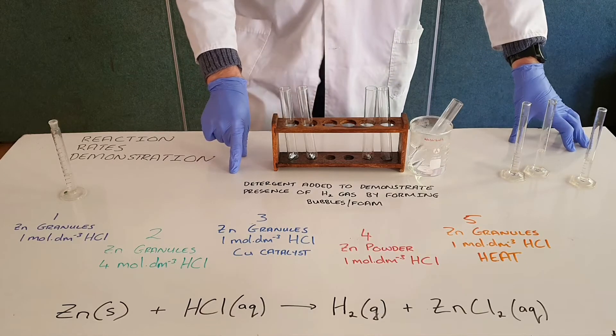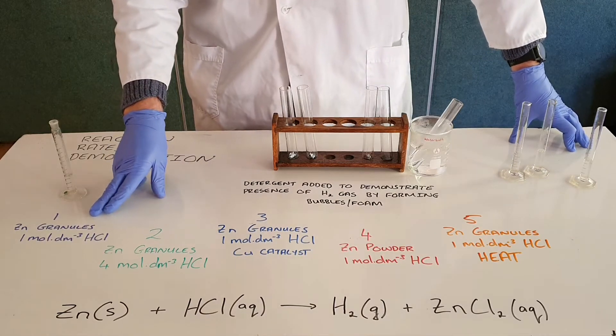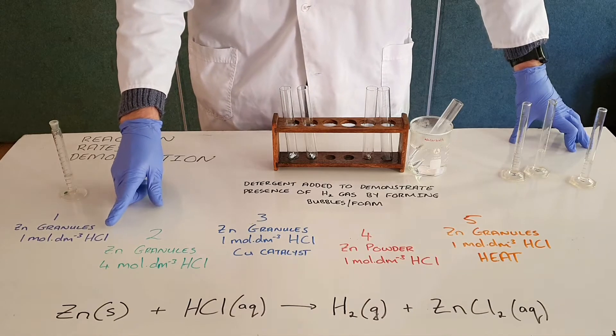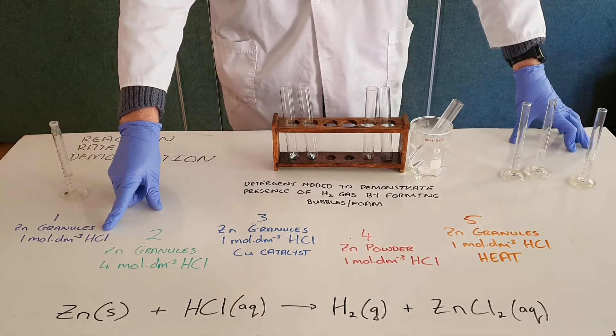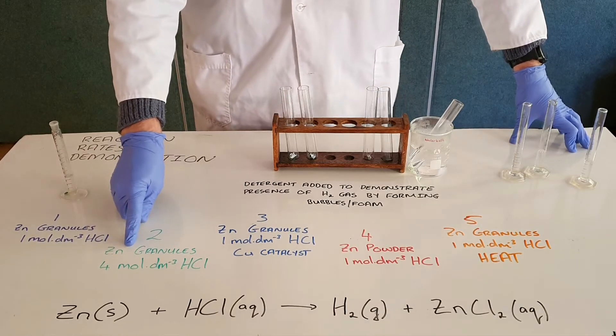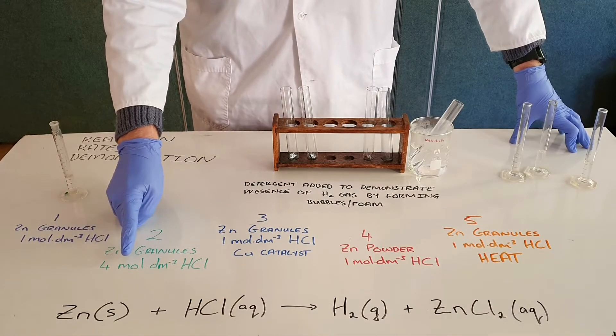In our first test tube we have zinc granules, also known as zinc chunks, with 1 molar hydrochloric acid. The second test tube has zinc granules with 4 molar hydrochloric acid. The third test tube has zinc granules with 1 molar hydrochloric acid with a copper catalyst.